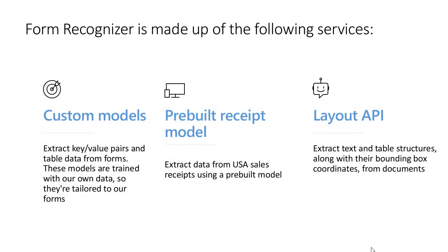Form Recognizer has some capabilities I'd like to briefly discuss before we jump into the demo. First of all, with Form Recognizer we can build custom models. Using the labeling tool, which I will show in this video, we can mark specific parts of a document and train the model, so it will be able to extract data from those specific parts. This is a great functionality if you have different types of documents and you want to extract data from them.